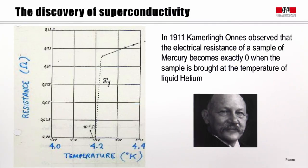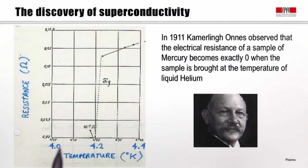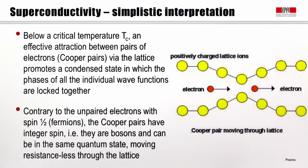Superconductivity was discovered in 1911 by Kamerlingh Onnes, who observed that the electrical resistance of a sample of mercury became not just small, but exactly zero when the sample was brought to the temperature of liquid helium. So this is the original plot that he produced. You see that below 4.2 degrees Kelvin, the resistance is identically equal to zero. That opened the field of superconductivity. We have no time in this course to explain the physics behind superconductivity, but let's give a very simplistic interpretation of what happens at a microscopic scale. Below a critical temperature, referred to as Tc, there's an effective attraction between pairs of electrons, which we call Cooper pairs.